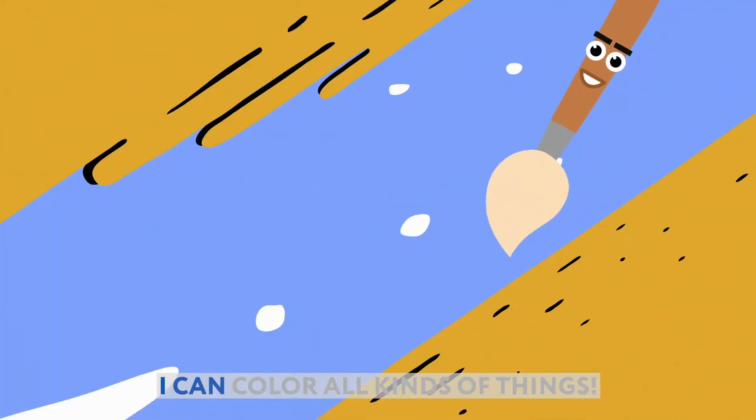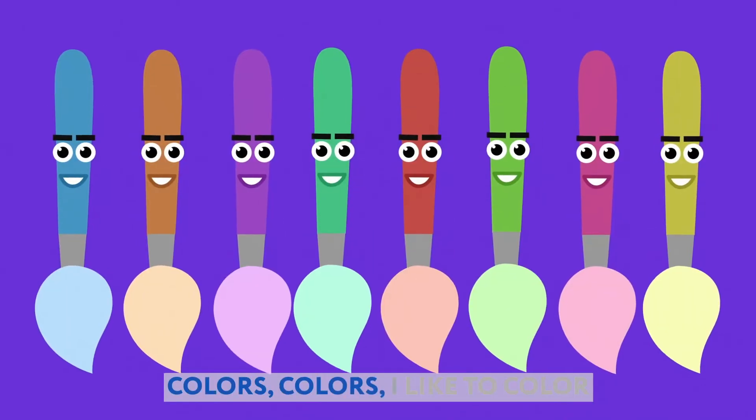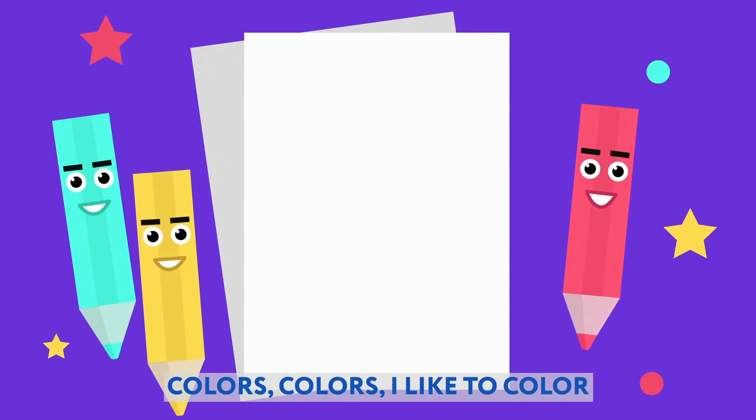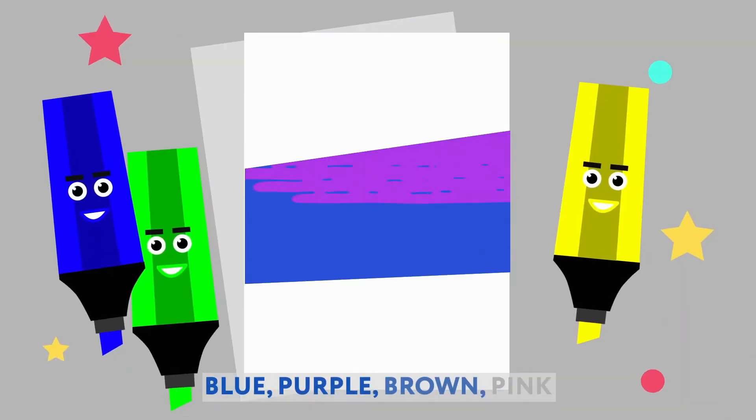I can color all kinds of things. Colors, colors, I like to color. Red, orange, yellow, green, blue, purple, brown, pink.